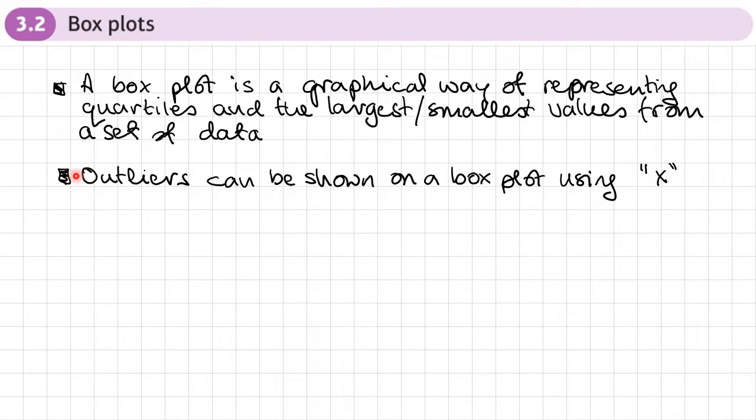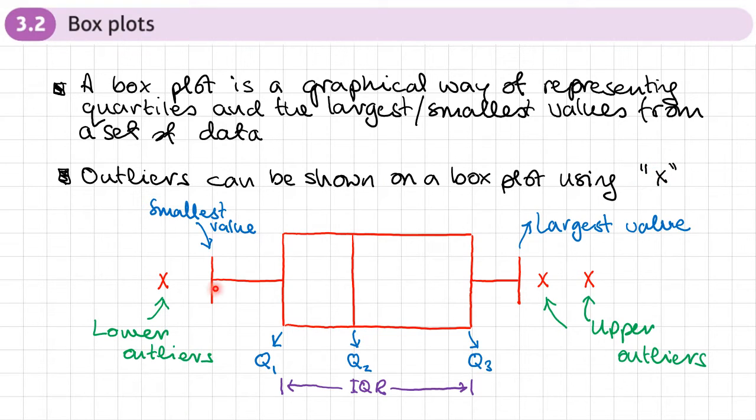What's new about box plots is that we can actually represent outliers on the box plot by representing them with crosses. This is what a box plot would look like where we have outliers represented.